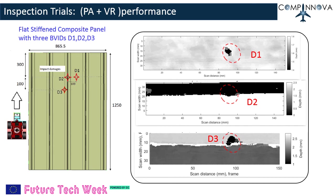Inspection trials: the integration of the PA module with the Vortex robot was evaluated by carrying out inspection on a flat stiffened panel with three barely visible impact damages D1, D2, and D3. Inspection of impact damage at this location is carried out with the Vortex robot. Three time-of-flight C-scan images are shown in the second schematic. Impact damages D1 and D3 are clearly seen, whereas damage D2 is not visible due to the damage being exactly on the web region of the stiffened structure.